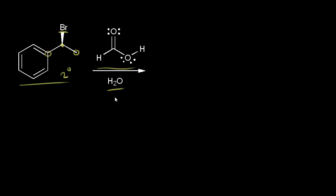Let's look at another example. Our alkyl halide has the carbon bonded to bromine attached to two other carbons, so this is a secondary alkyl halide, meaning we could have either SN1 or SN2. Our nucleophile is formic acid, which is a weak nucleophile, and water is a polar protic solvent. These two things favor an SN1 type mechanism — the polar protic solvent water can stabilize the carbocation that would result. So the first step is loss of our leaving group: electrons come off onto the bromine to form the bromide ion, leaving a plus one formal charge on the carbon in red.